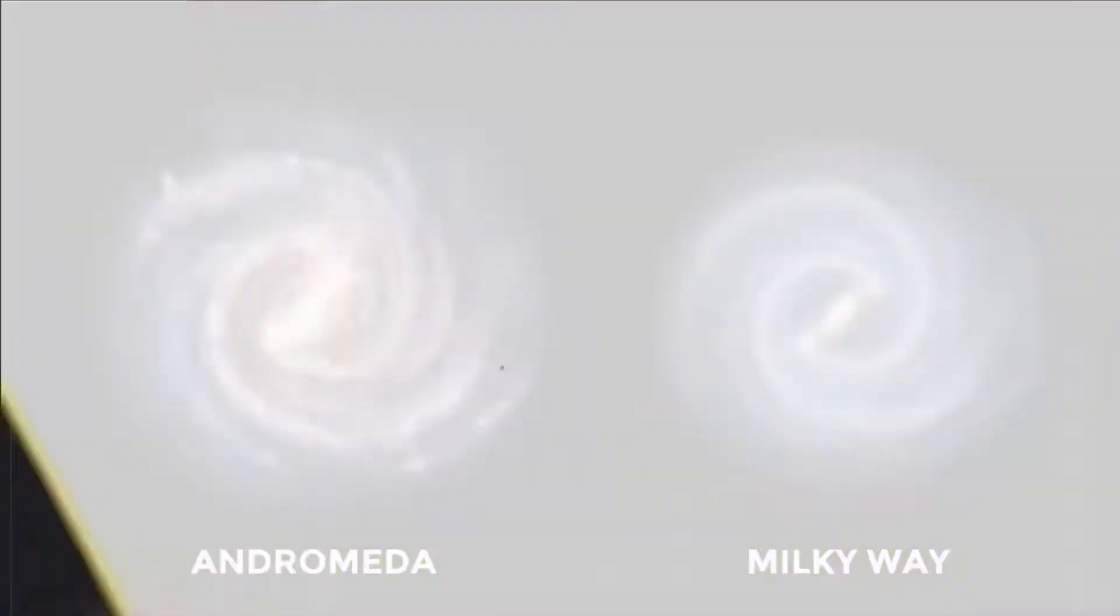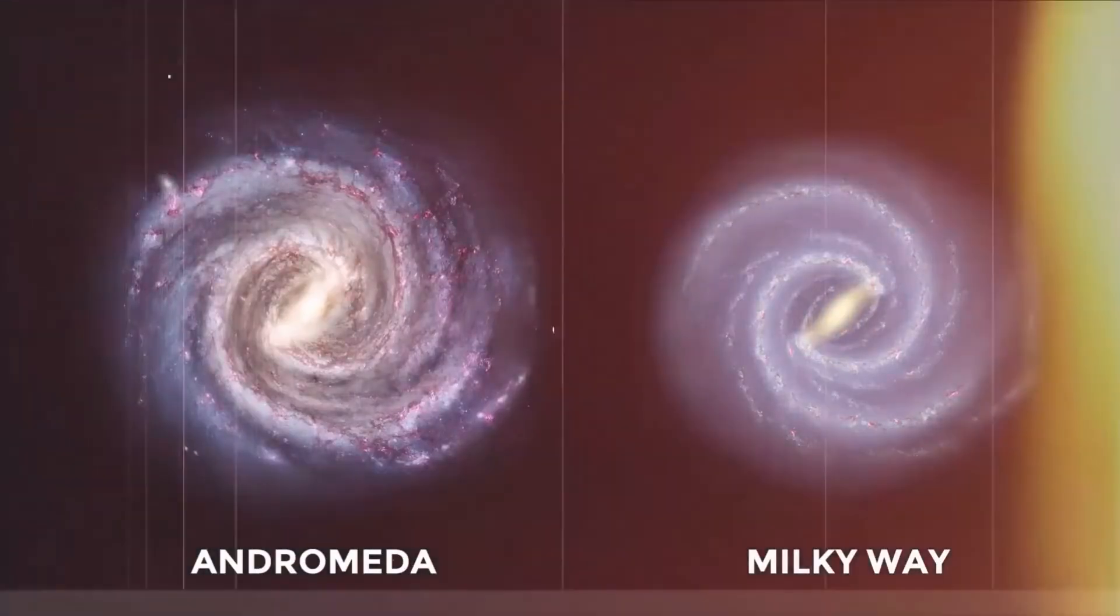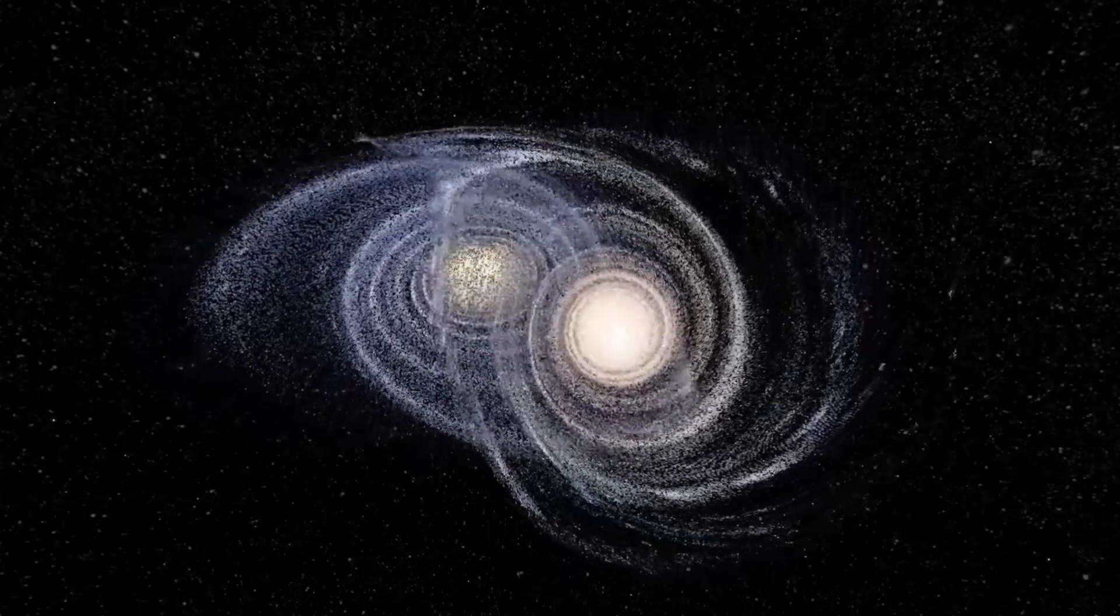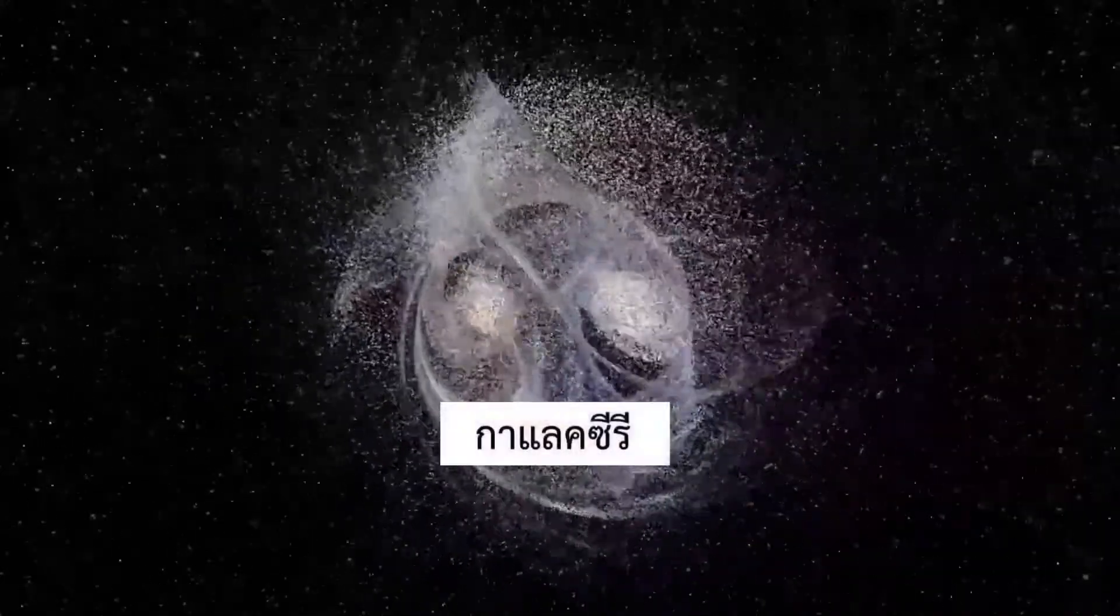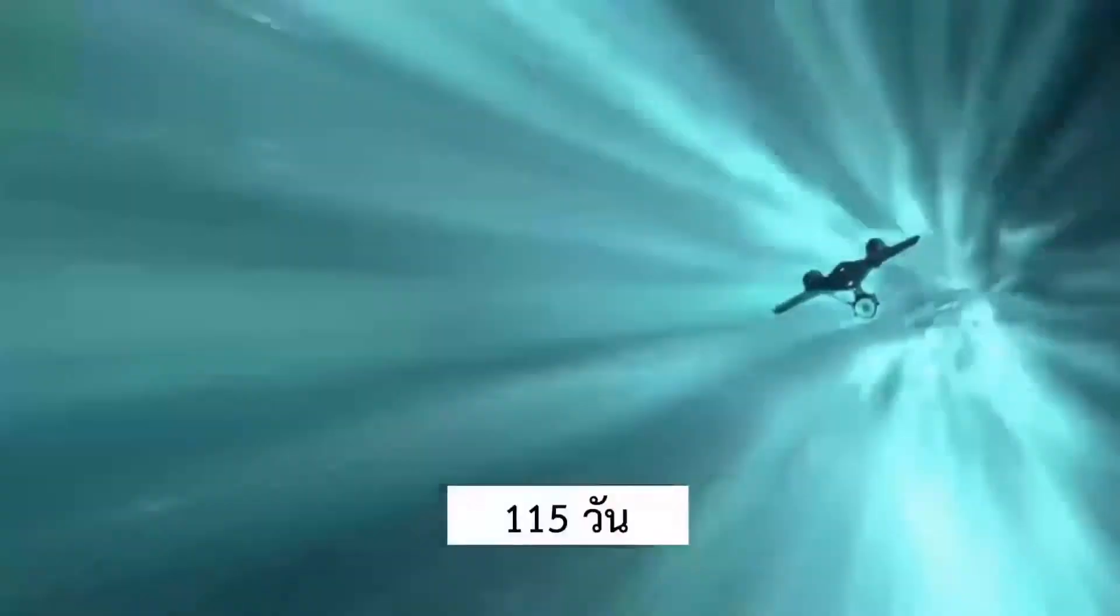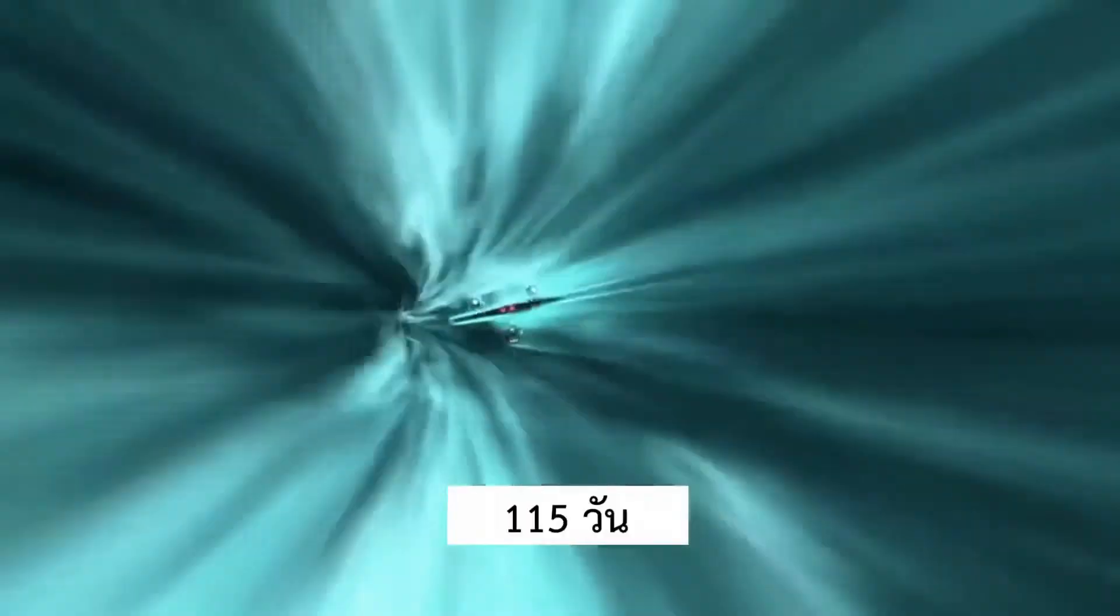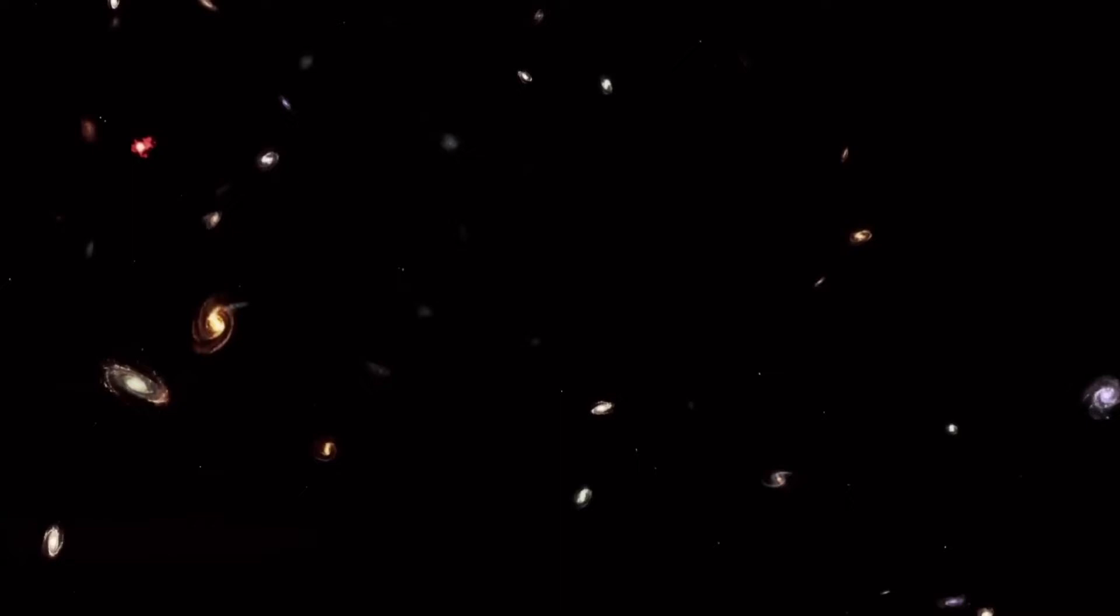After 115 days of travel, we came out of the Local Group of galaxies with more than 50 galaxies in the group. The Milky Way and Andromeda are also in this group, which has a center of gravity between the Milky Way and Andromeda itself.